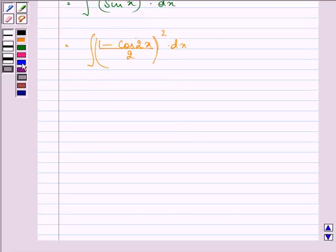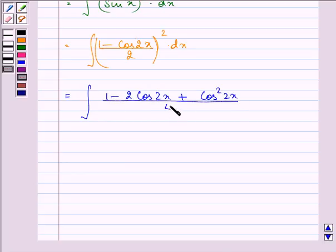Now on expanding, we have integral of 1 minus 2 cos 2x plus cos squared 2x whole divided by 4 into dx.